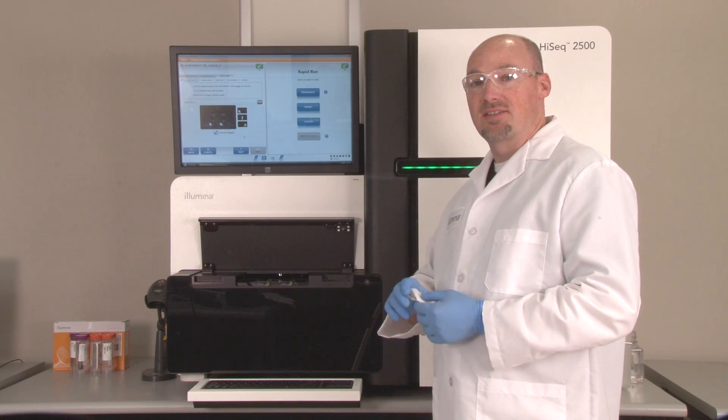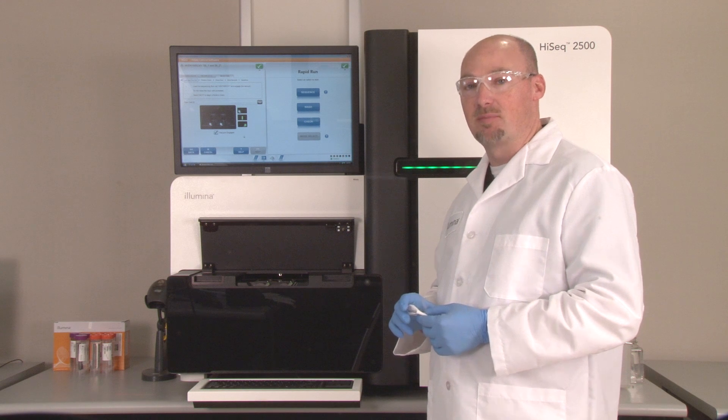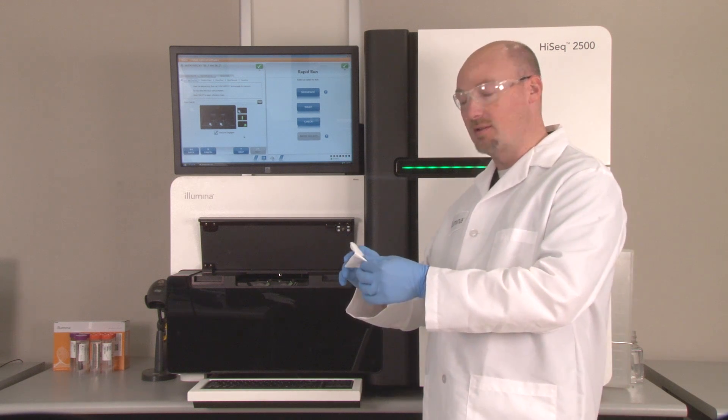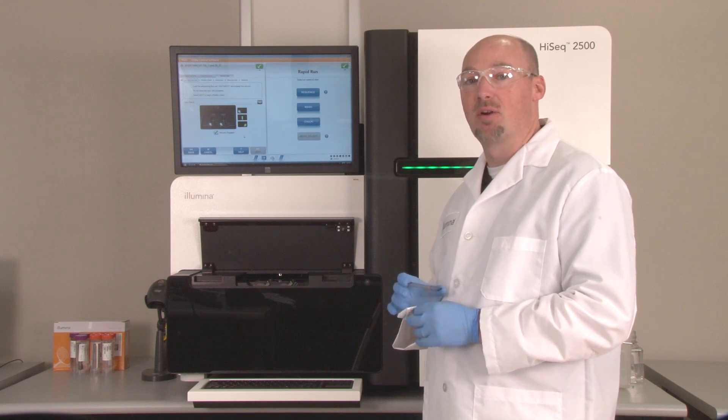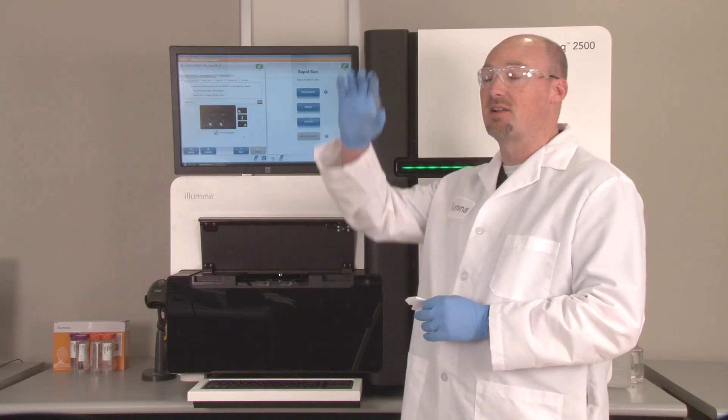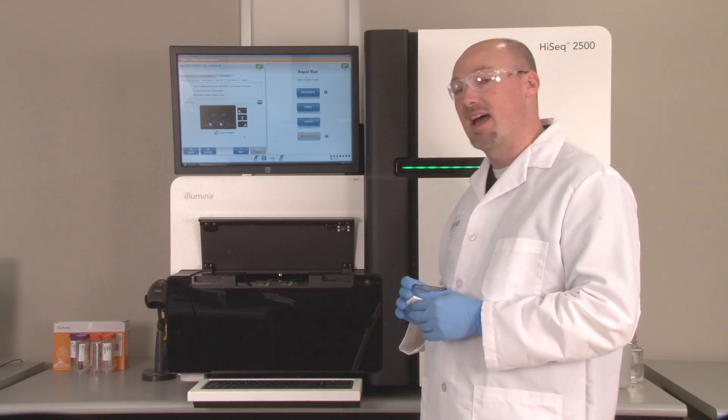Now that the flow cell stage is clean, you are ready to load your flow cell. Follow the standard cleaning procedure with water and ethanol. Also, verify that there is no debris or adhesive substance on the flow cell itself that can transfer to the stage and prevent the flow cell from sitting flat.